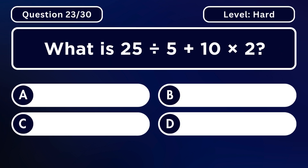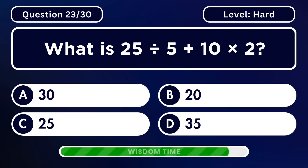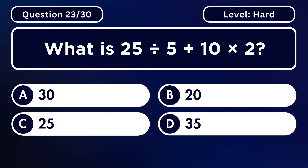What is 25 divided by 5 plus 10 multiplied by 2? Answer C. 25.